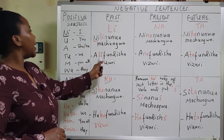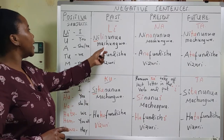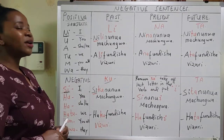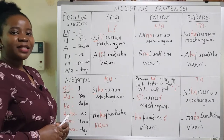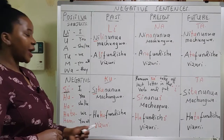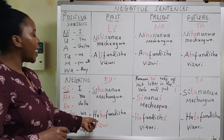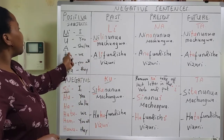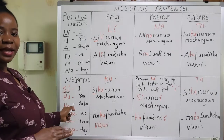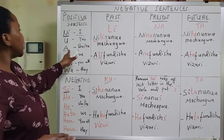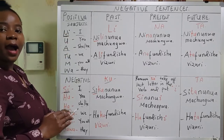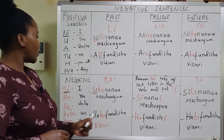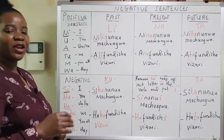Another example: alifundisha vizuri, meaning 'he or she taught very well.' Li is for positive past tense. If you want to say 'she didn't teach very well,' you say hakufundisha vizuri. We use ha because ha stands to represent she or he in the negative form, just as a does in the positive form.